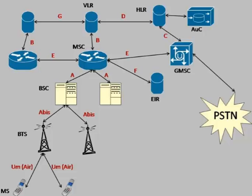This end-to-end diagram shows all the interfaces connected — base station controllers and mobile switching centers connecting to the VLR, the VLR connecting to the lone HLR, and the HLR connecting to the authentication center. It also shows the gateway mobile switching center, the equipment identity register, base station controllers, base stations, mobile devices, and the public switching telephone network all working together.